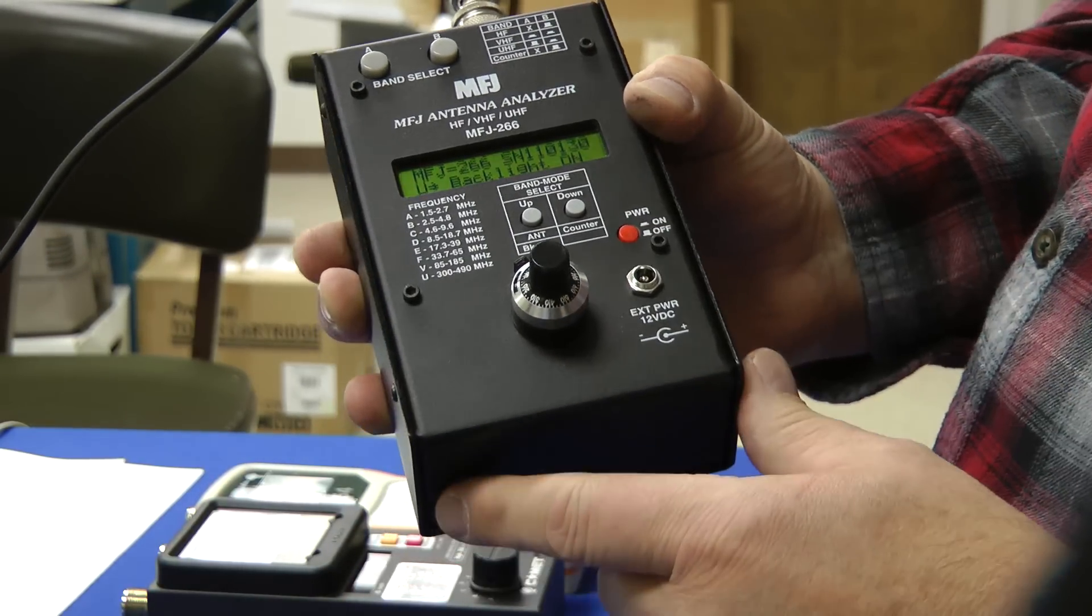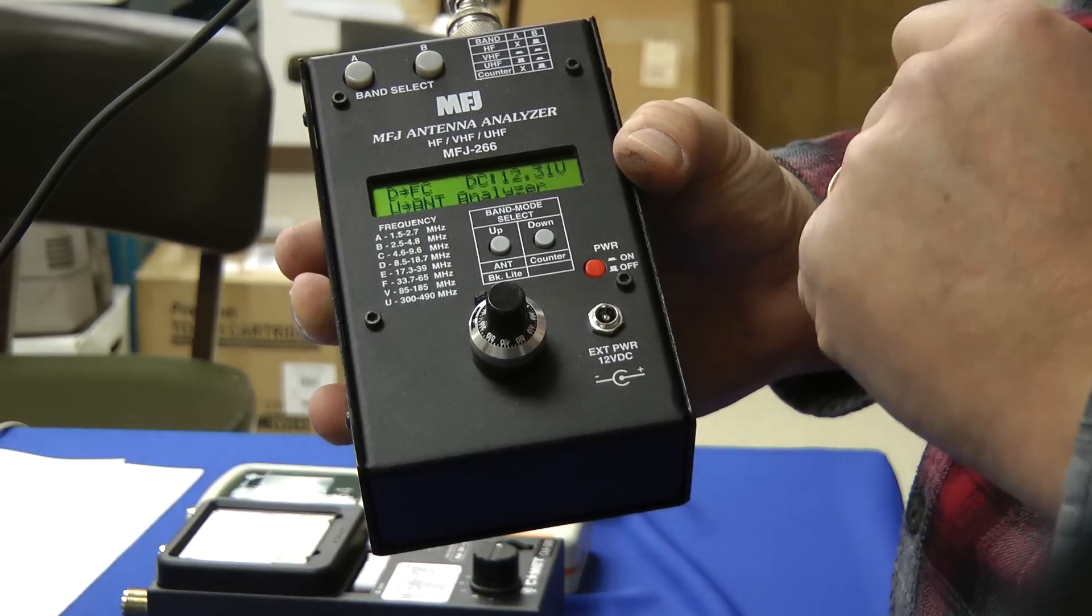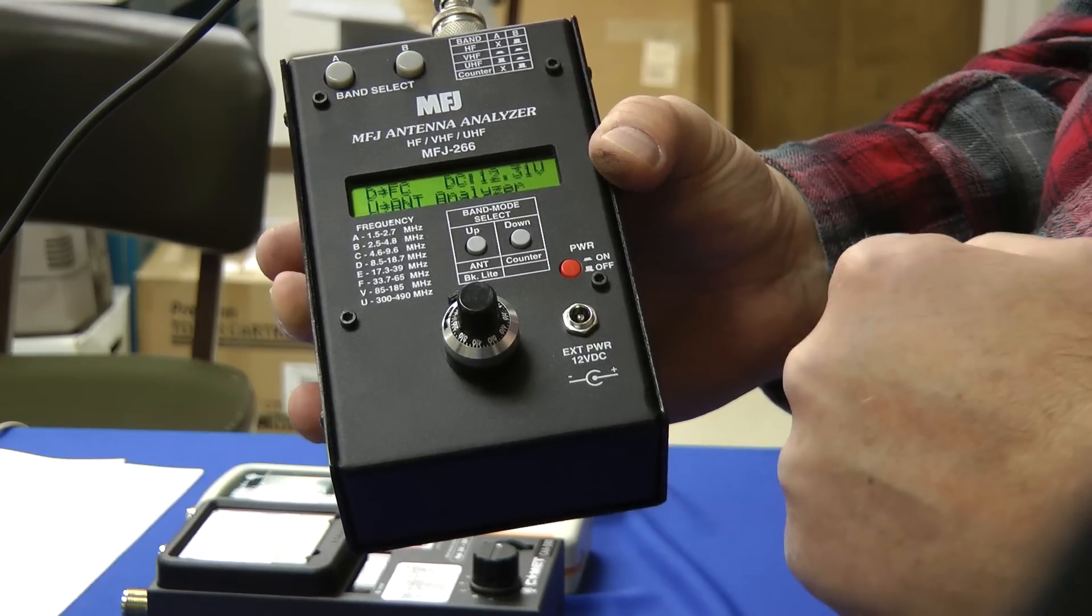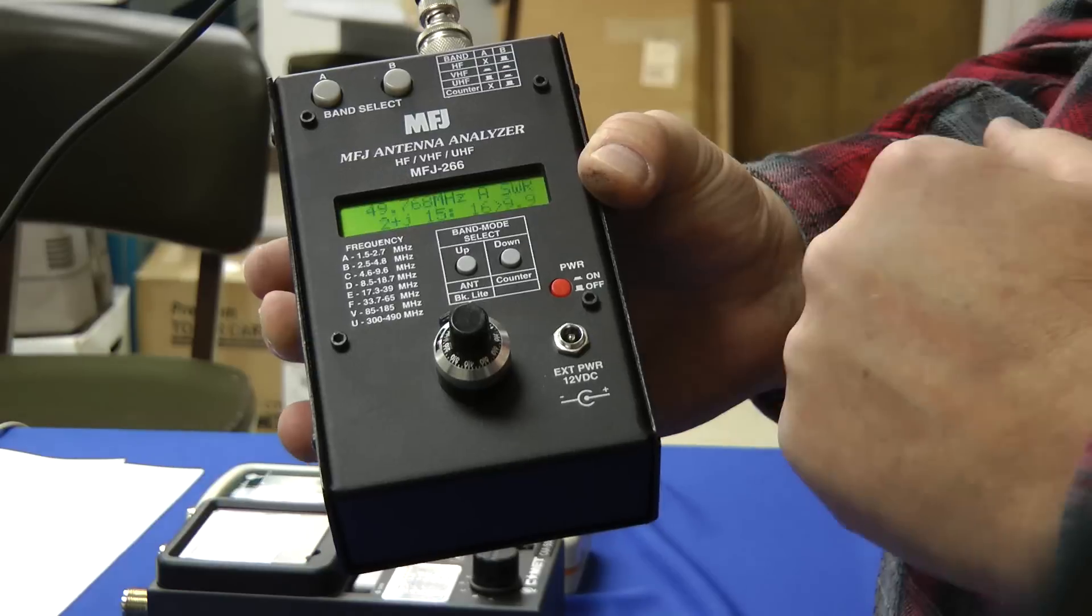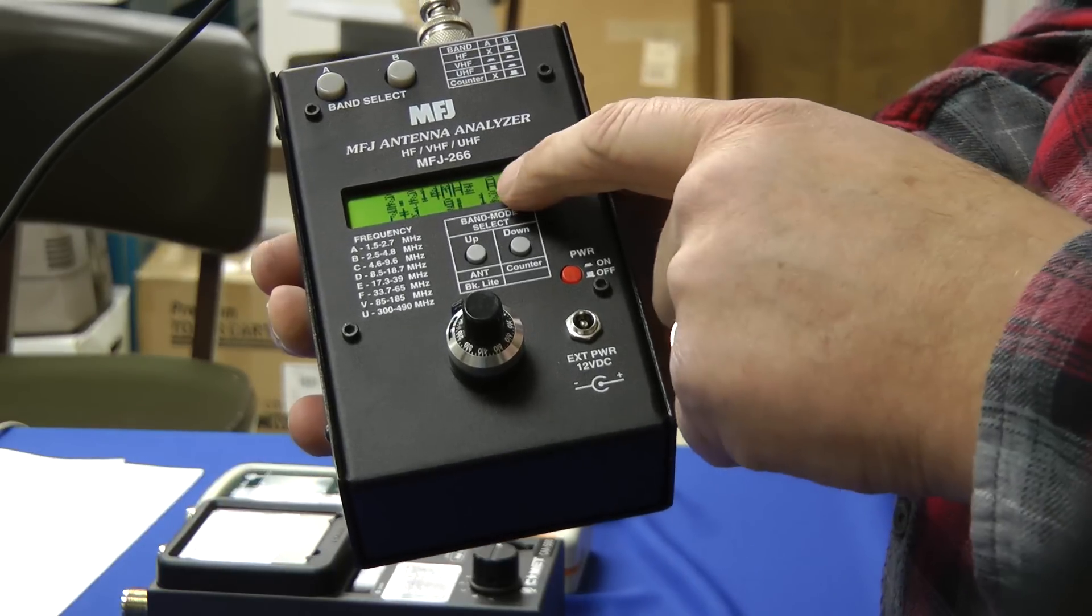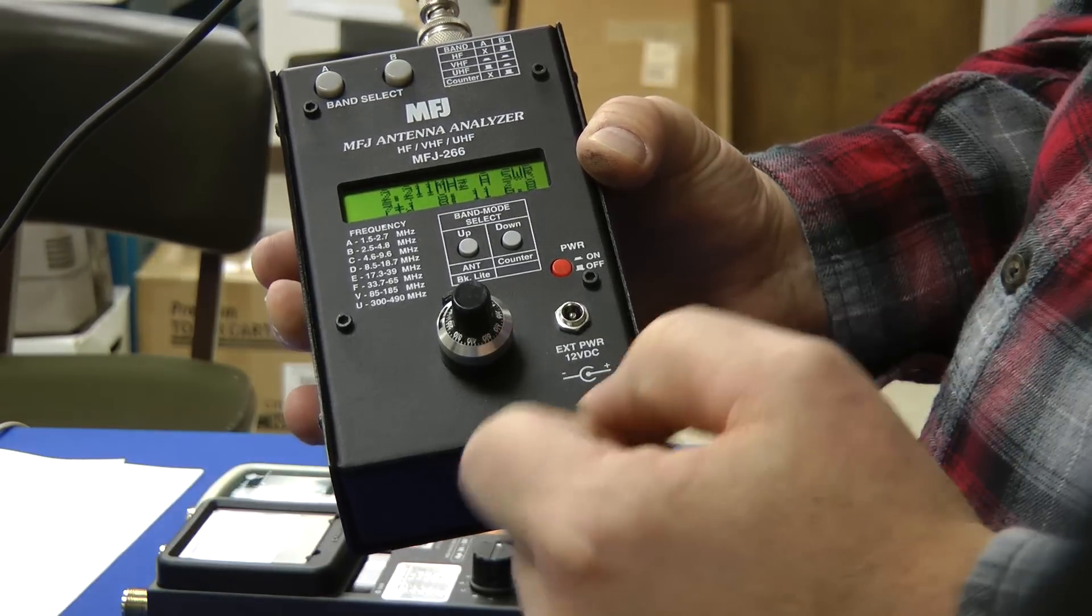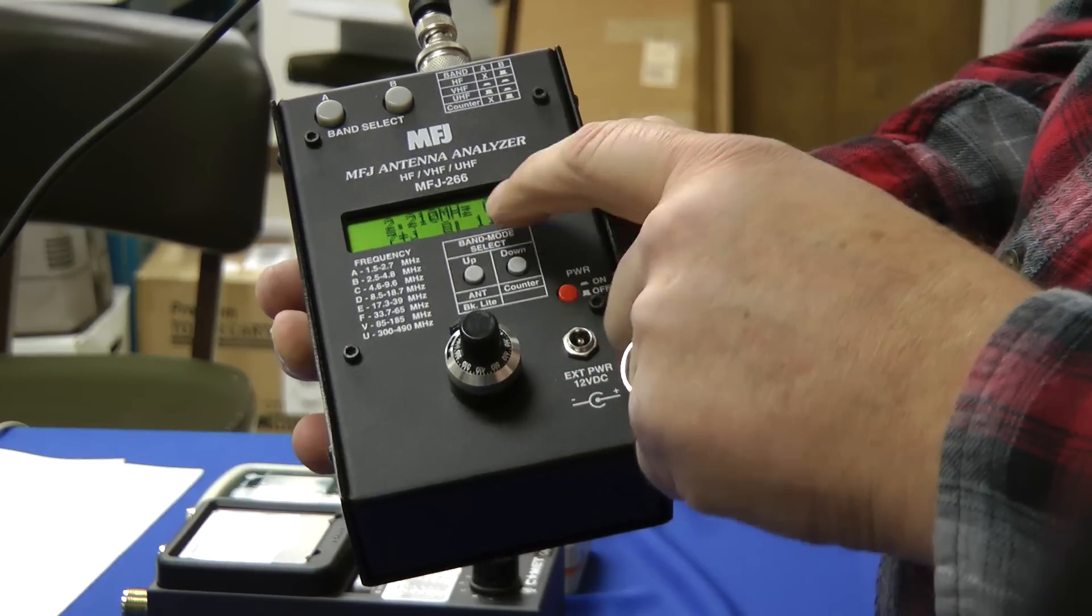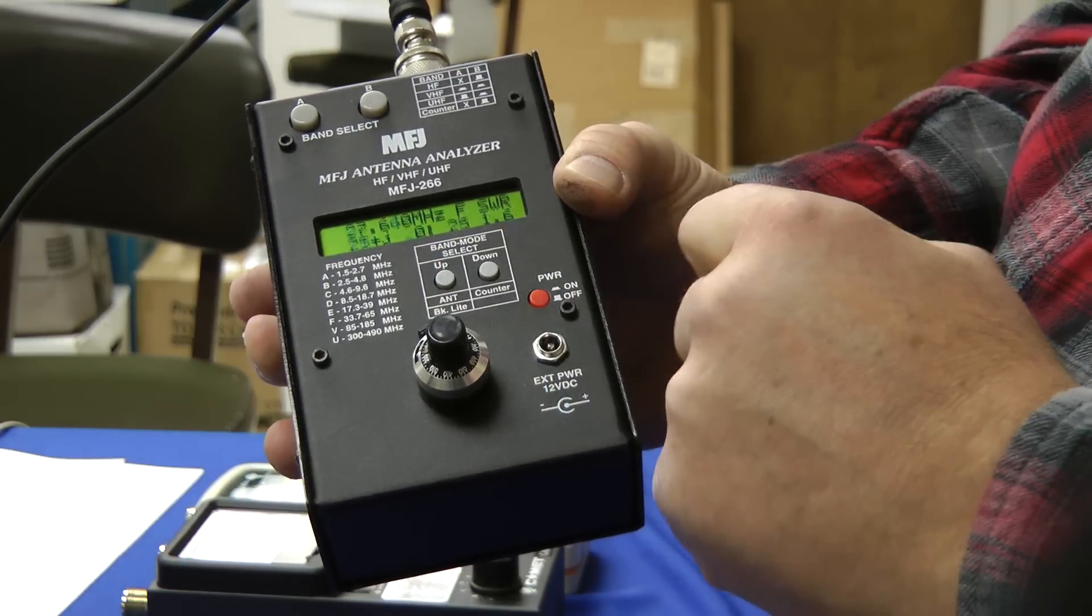Let's turn it on. Right off the bat you'll see a battery indicator. We have 12.3 volts. That's a good thing if you're up on top of the tower you don't want a dead battery. Let's select it as an antenna analyzer. We'll just press this button here. This says band A, that corresponds to 1.5 to 2.7. Let's check out 6 meters. That should be band F. So I'll use the up button. B, C, D, E, and F.